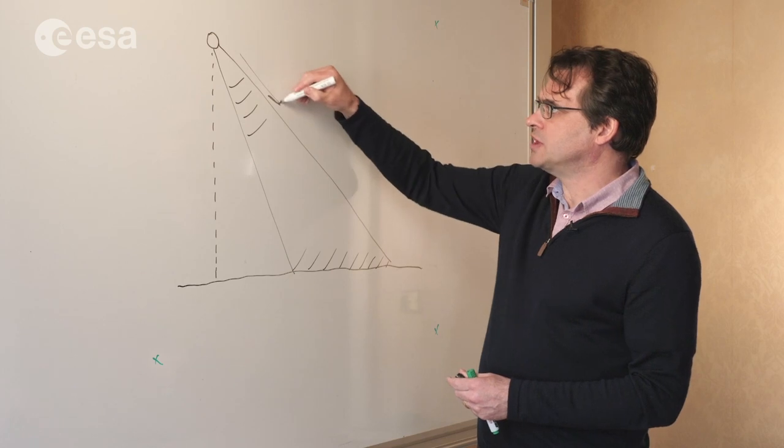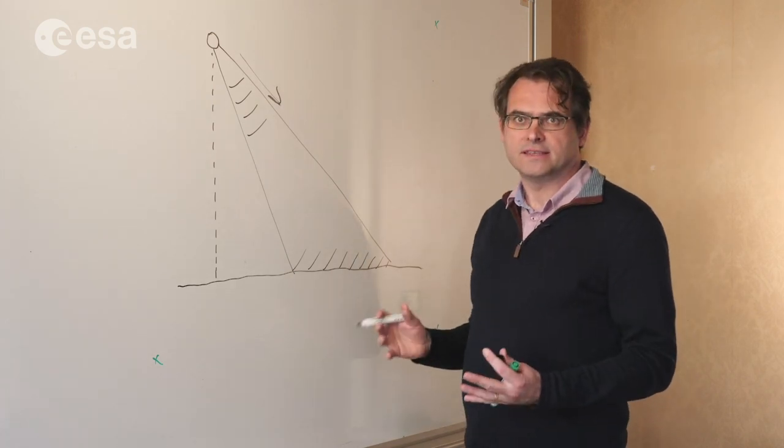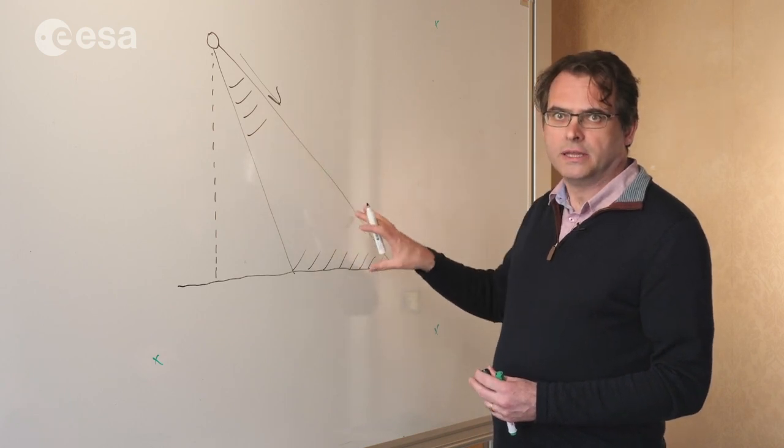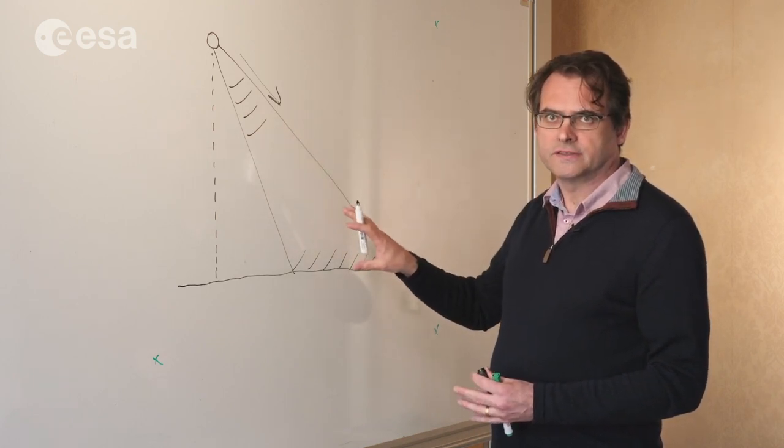And we talk about the range direction as being the distance away from the sensor and for an imaging system that is obliquely off to one side.